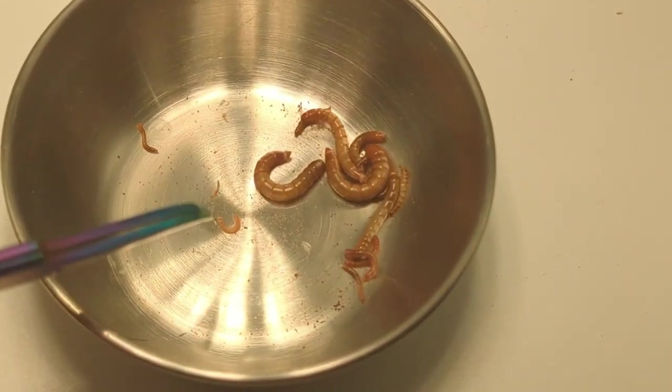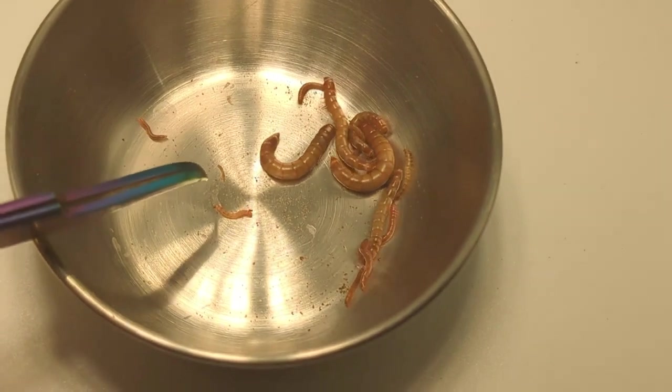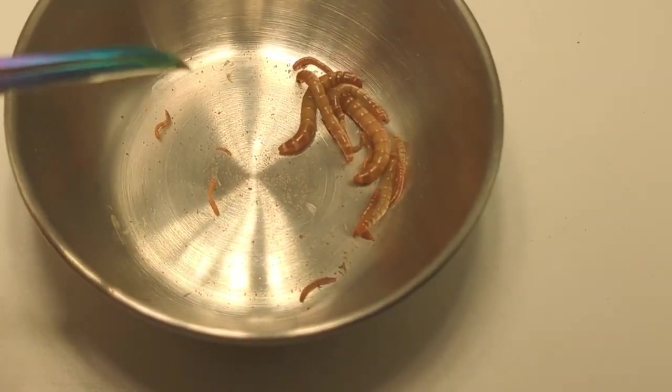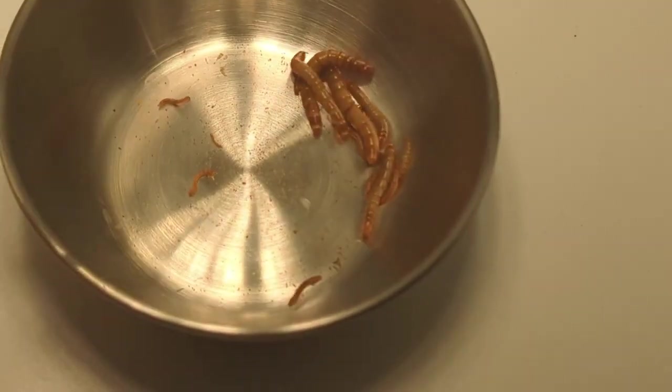And even the newborn hatchlings can technically eat these little tiny guys, but I find that fruit flies are just easier to breed in quantities because you have to really search for these little tiny tiny guys.